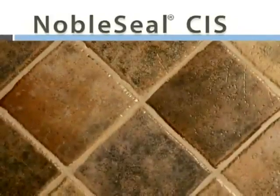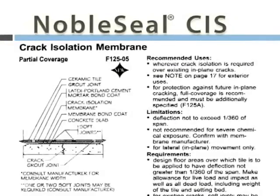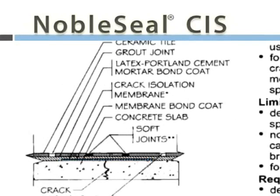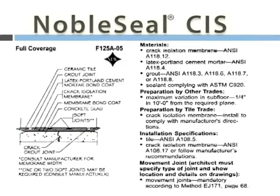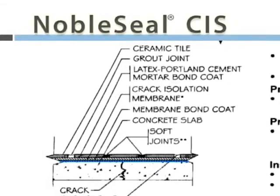The TCNA Handbook shows two methods of installation for crack isolation membranes. Partial coverage involves installing membrane only over the cracks or joints — this method may be suitable as long as the concrete does not crack in other areas. Full coverage requires crack isolation membrane under all the tile, and it provides more assurance that future cracks in the concrete will not affect tile performance.